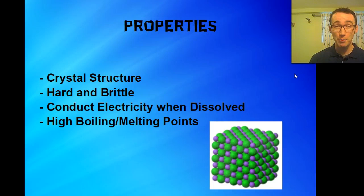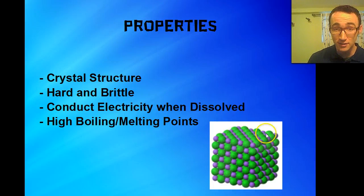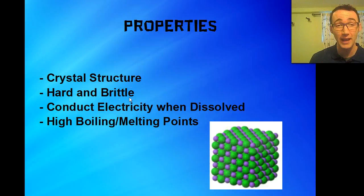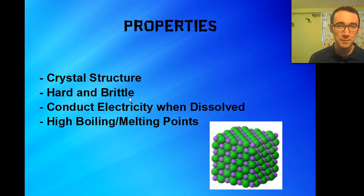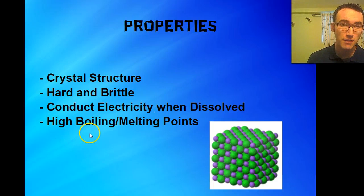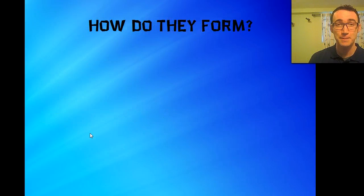There are some properties of ionic compounds. They always form crystals, so they have a crystal structure like you can see in this diagram right here. They're also hard and brittle, so they're not malleable — you can't bend them. They conduct electricity when they're dissolved in water, so an example would be salt water, and they also have high boiling and melting points.